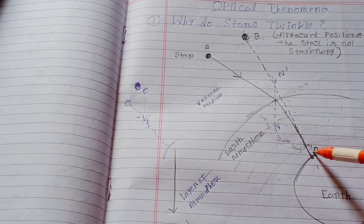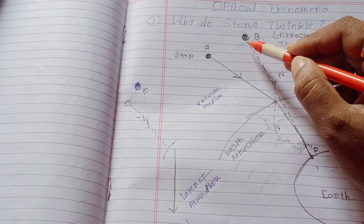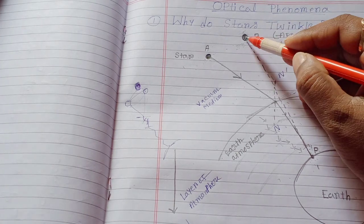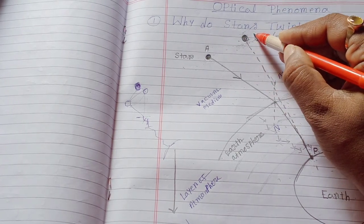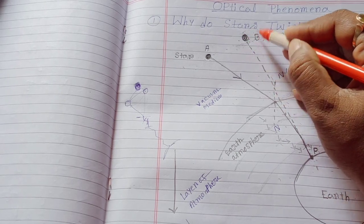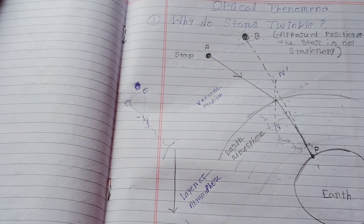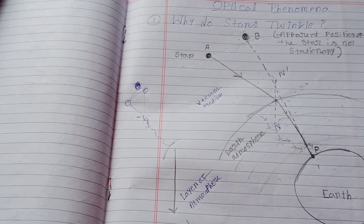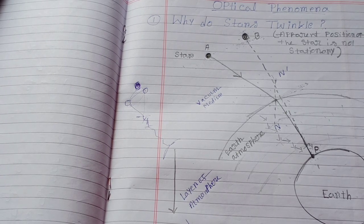As a result, the observer will see the star fluctuate. Sometimes the observer will see the star at this position and sometimes at here. Actually, the apparent position of the star fluctuates, and as a result, the star gives rise to the twinkling effect to the eyes of the observer. So that is the actual reason of this optical phenomena.